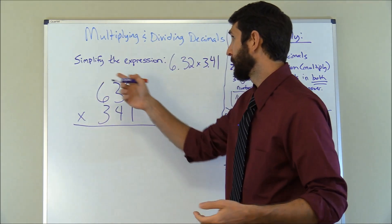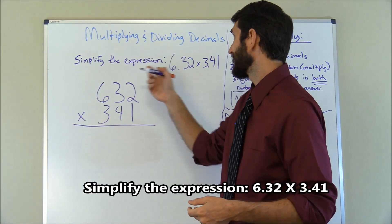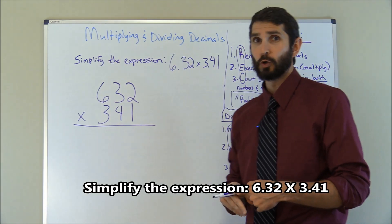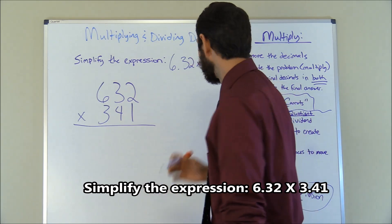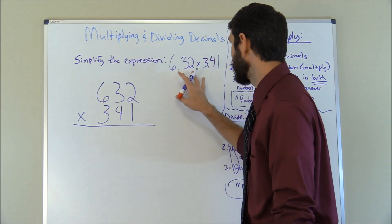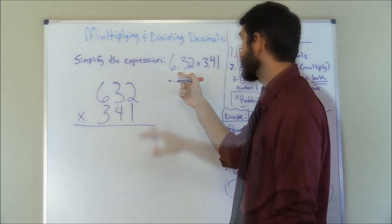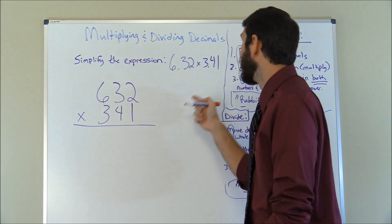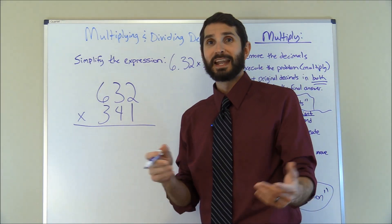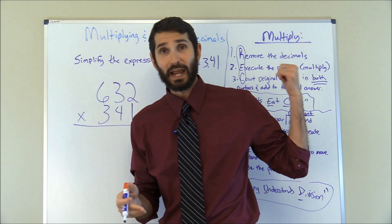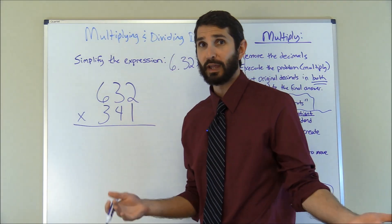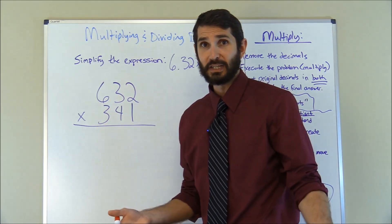Let's work a multiplication problem. We have: simplify the expression 6.32 times 3.41. Following the first part of our mnemonic, the R, we remove the decimals. So 6.32 becomes 632 and 3.41 becomes 341. The next part is E for execute — we're gonna solve this problem just like any ordinary multiplication problem.